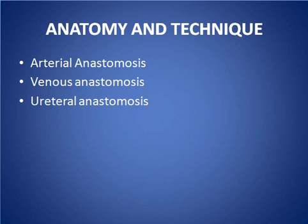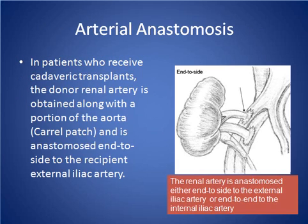We have arterial anastomosis, venous anastomosis, and ureteral anastomosis. Arterial anastomosis can be performed either as end-to-side anastomosis to the external iliac artery, or end-to-end to the internal iliac artery.